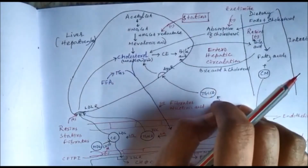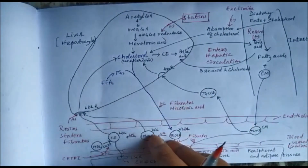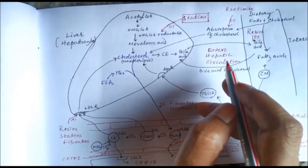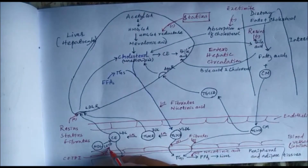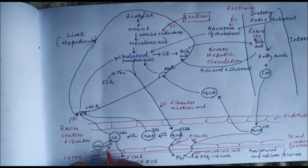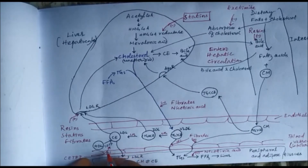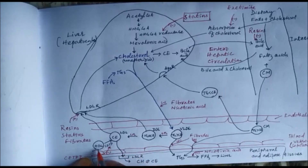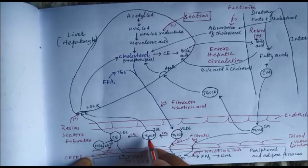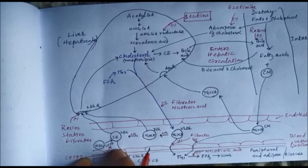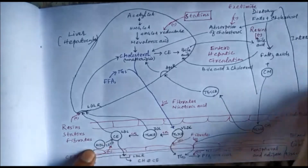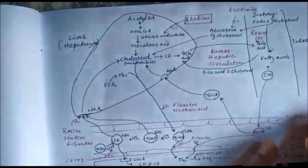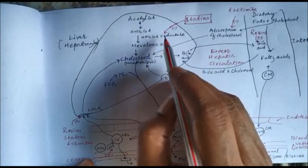There is another important protein called CETP — cholesterol ester transfer protein — which transfers cholesterol from HDL to LDL, IDL, and VLDL. CETP is one important enzyme which actually decreases the HDL level. Drugs we can use as lipid lowering drugs: number 1, if we inhibit the synthesis of cholesterol — HMG coenzyme A reductase inhibitors like statins.